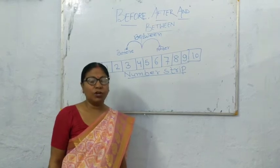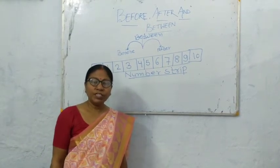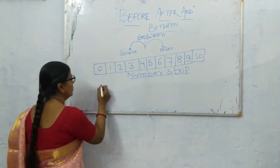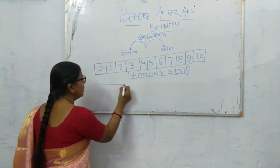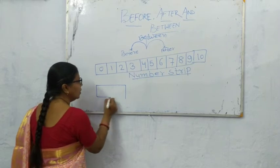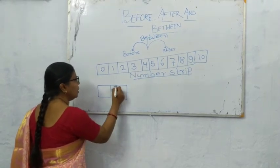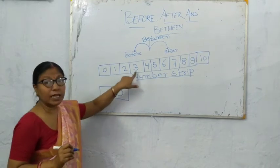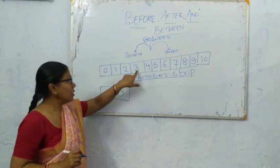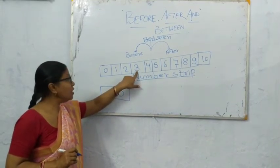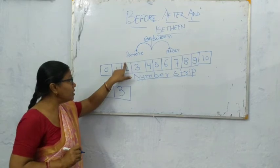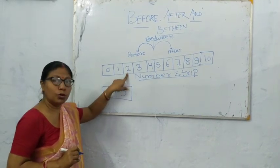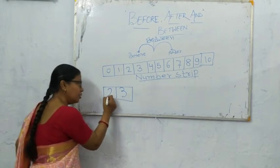First of all, we will see which number comes before. Check the number string. Which number comes on the left side of 3? The answer is 2.